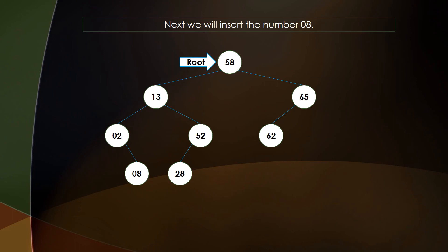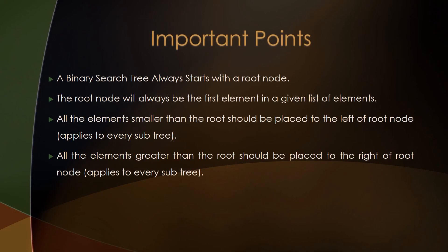This is how a binary search tree is constructed from a given set of data. Before concluding, here are a few important points to remember: a binary search tree always starts with a root node, and the root node will always be the first element in a given list of elements.